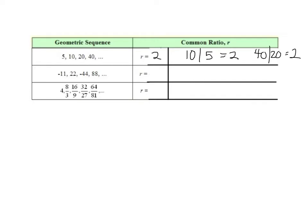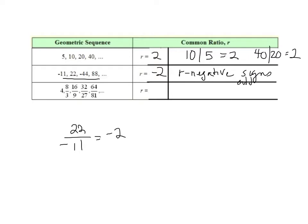Here we're noticing the signs are alternating. So if I take 22 divided by negative 11 I'm going to get negative 2. When r is negative, the signs are going to alternate — that's going to be important.